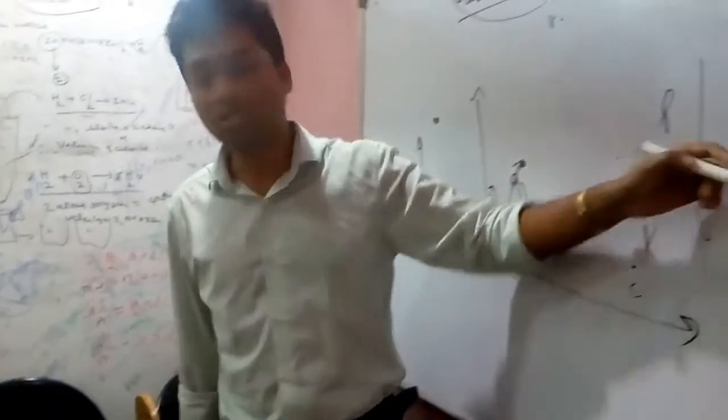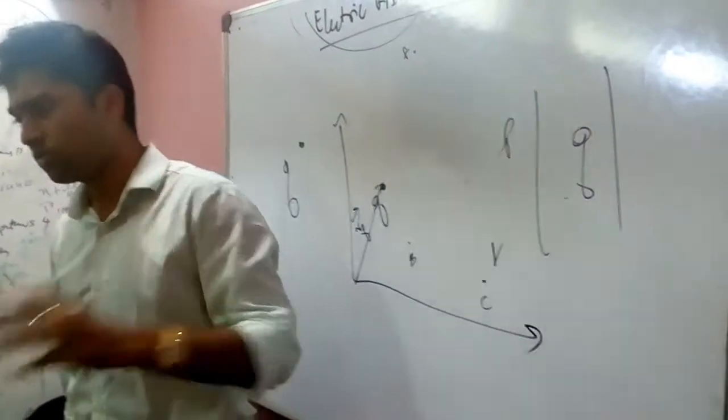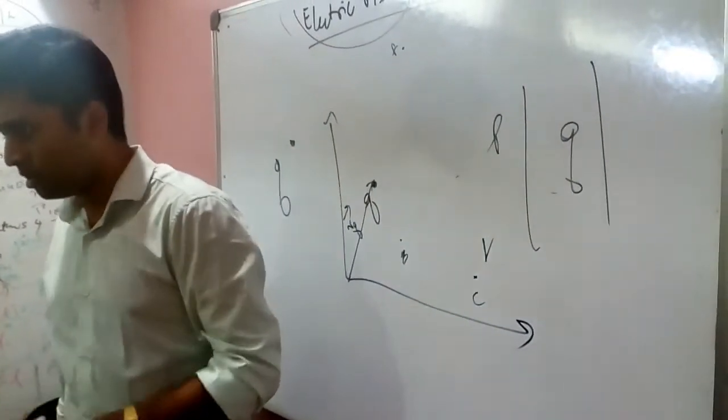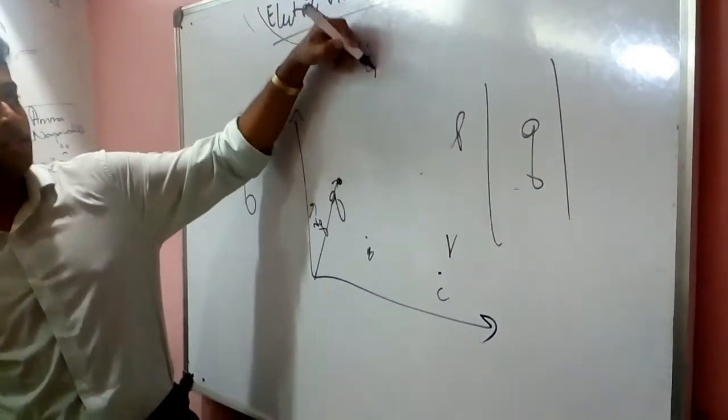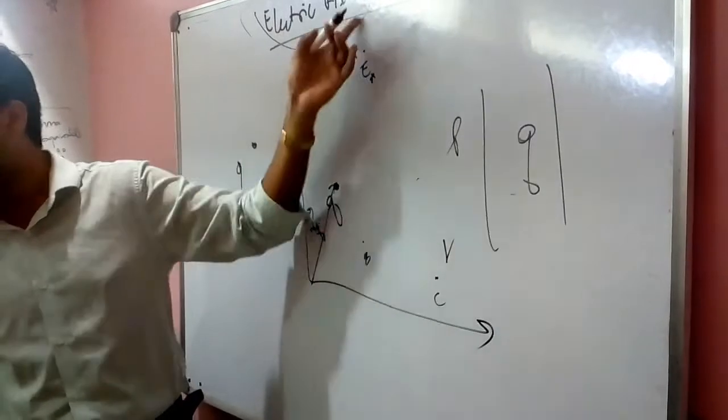Alright, let's say the value of this charge is mod Q. Whatever it is, positive or negative doesn't make a difference right now. Now that charge will experience some effect here. Let's call that effect E at A, the effect at A.